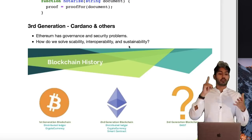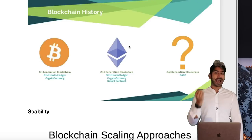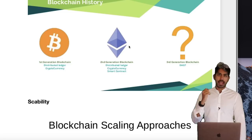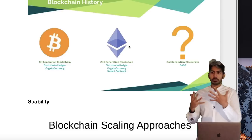Looking at blockchain history: Bitcoin allowed for a distributed ledger and the advent of cryptocurrency. Ethereum allowed for the same two things, plus smart contracts. Now the third generation of blockchain has to do more than both of them combined. Any kind of programmable blockchain is Turing-complete and allows for building all sorts of decentralized applications. However, the problem is not the number of features — it's the infrastructure.